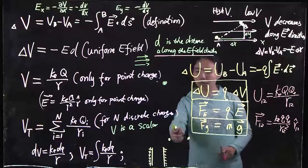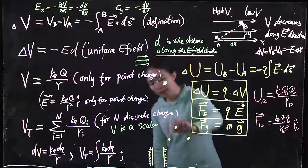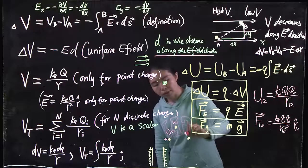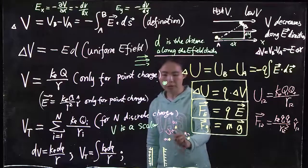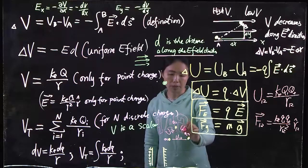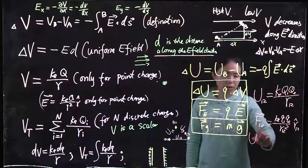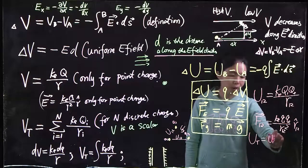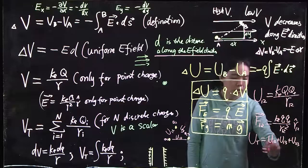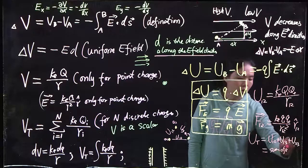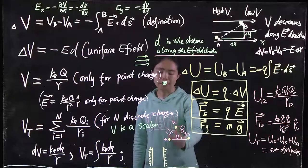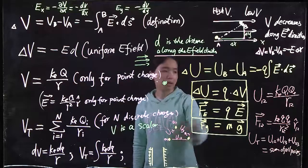Similarly, if you have more than two charges — one, two, three — then you have U12, U13, and U23. You have some energy between each pair. So the total U equals all the pairs: U12 plus U13 plus U23, the sum of all pairs. Each pair only counts once — you do not count one-two and then also two-one. One pair counts once.